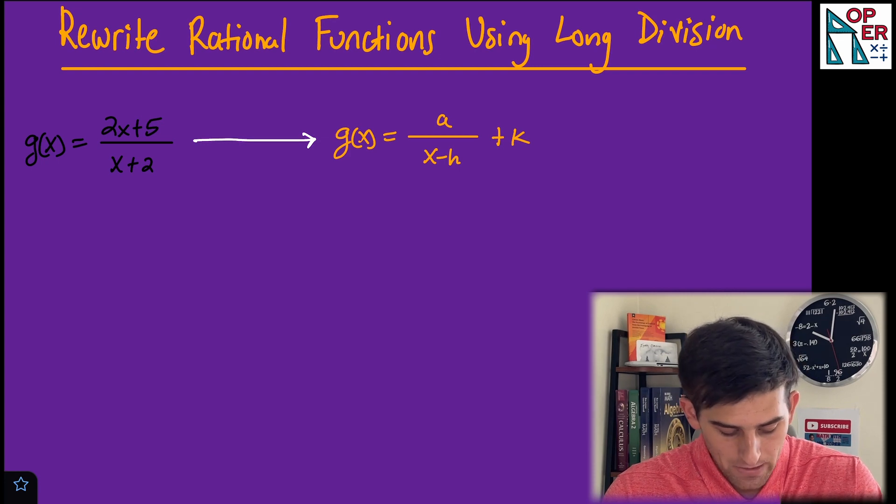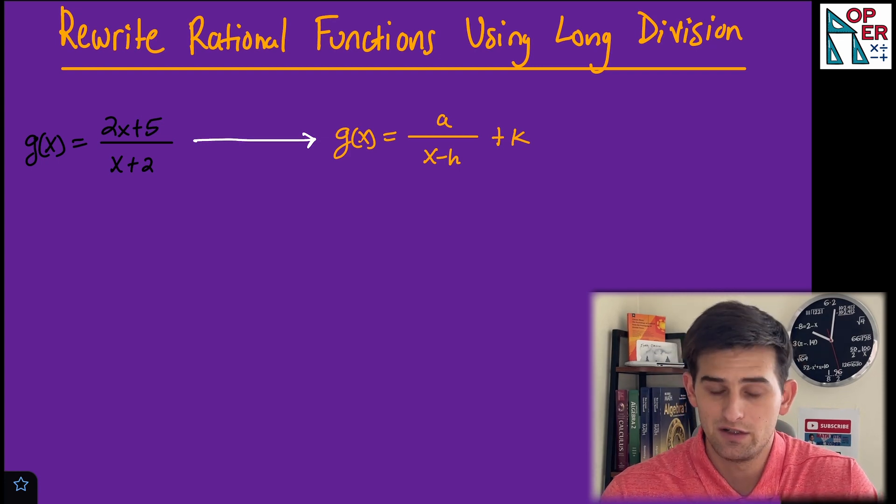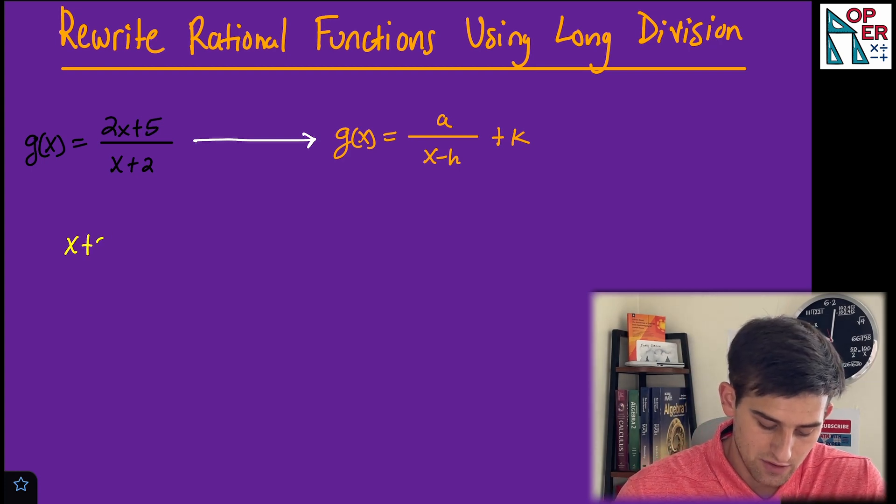Let's go ahead and do this one. We have g(x) = (2x + 5)/(x + 2), and we're going to use long division to do this. So we have x + 2 on the outside and 2x + 5 on the inside.